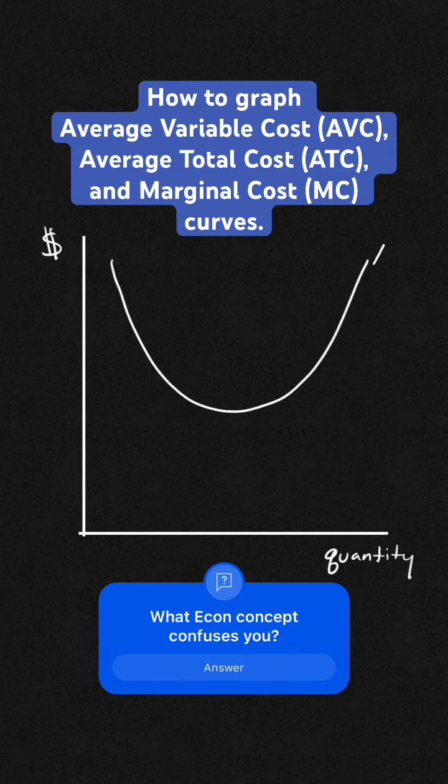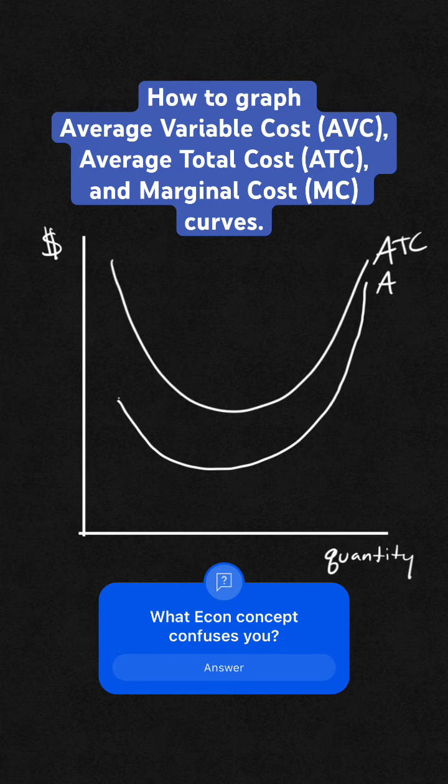We always want to start with a parabola for average total cost. Now, average variable cost looks very similar. It's going to start down here, quite a ways away from average total cost, but have this same parabola shape, but it's going to get closer and closer and closer as we increase our quantity. That's my average variable cost.